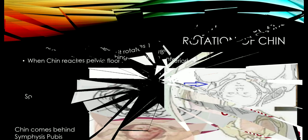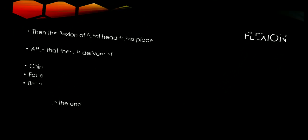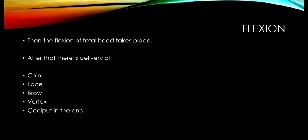After that, there occurs further descent and the head hinges under the sub-pubic arch. There occurs a twist in the neck, and with further descent the chin hinges under the sub-pubic arch. Then there occurs flexion of the head and delivery takes place in this manner: first the chin is delivered, then the face, then the brow, then the vertex, and then the occiput of the head is delivered. That is how the delivery of the head takes place.